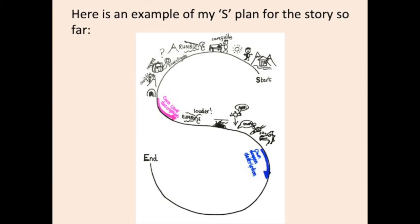Here is an example of my S plan for the story so far. In a small village surrounded by looming grey mountains, there lived a young boy called Ashton Gate. He lived with his hard-working dad in a small house beside the mountain, right at the very edge of the village. He spent his spare time helping his dad to make stone furniture to sell.